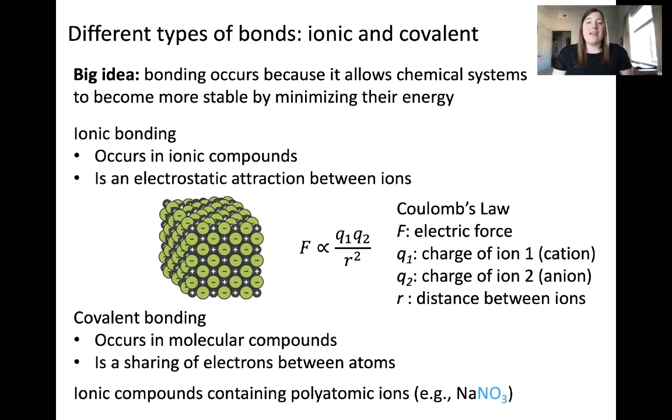But within the nitrate anion, NO3 minus, we have nitrogen and oxygen. These are only nonmetals. So within NO3 minus, nitrogen and oxygen are bound together via sharing of electrons, or covalent bonding.